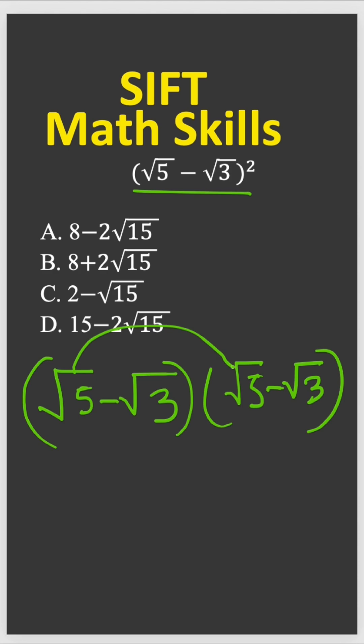So you need to use the FOIL method, multiply this with that and this with that and the same way, this with that, this with that, right.